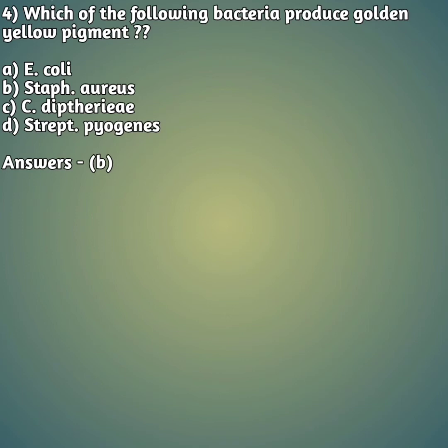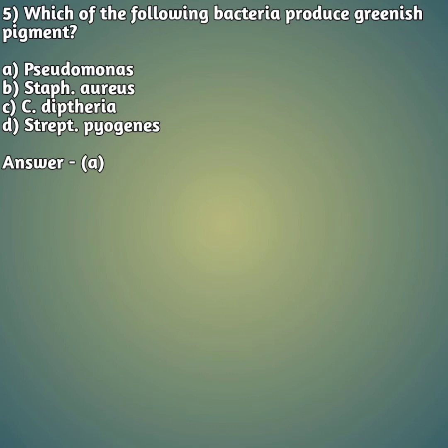Moving on to our fourth question: which of the following bacteria produce a golden yellow pigment? Option A: E. coli, option B: Staph aureus, option C: C. diphtheriae, option D: Strept. pyogenes. The right answer is option B — Staphylococcus aureus is the bacteria which produces the golden yellow pigment.